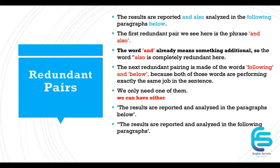Another example: 'The results are reported and also analyzed in the following paragraphs below.' Here we have two redundant pairs. First, 'and also' — 'and' already means something additional, so 'also' is redundant. Second, 'following' and 'below' — both words are doing exactly the same job, so you only need one.